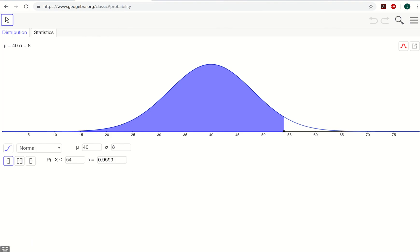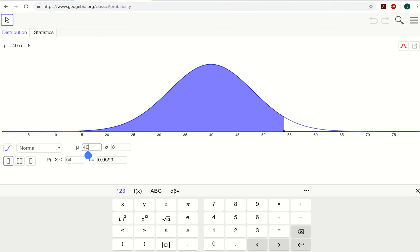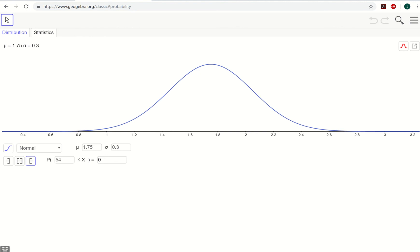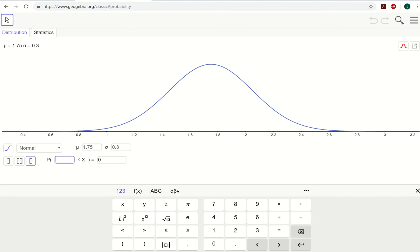We go into GeoGebra. We have a new mean, that mean is 1.75. We have a new standard deviation of 0.3. That adjusts our number line here so we can see our values change. Then what we want to do is find an area larger, so we need to switch into this right-hand mode and edit our value to be 2.11.